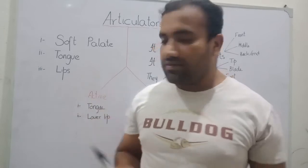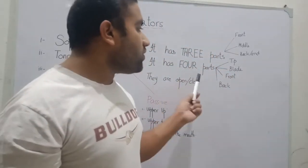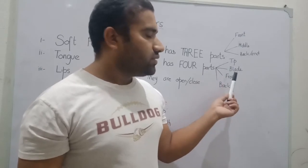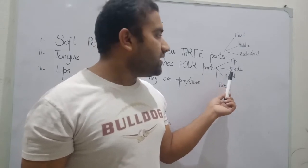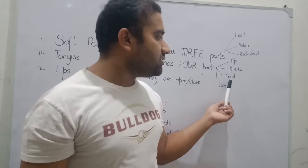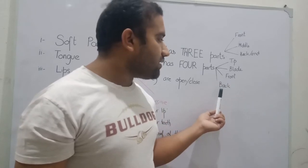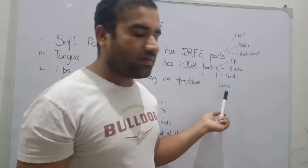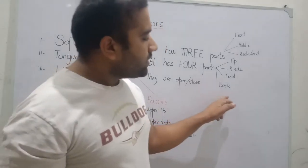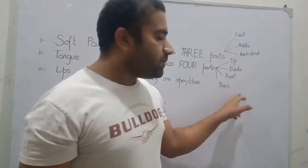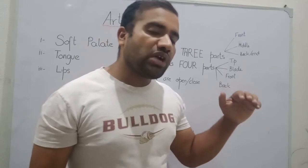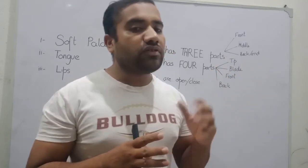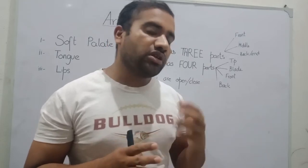The next articulator is the tongue. The tongue has four parts: one is the tip, second is the blade, third is the front, and the fourth is the back of the tongue. When a particular part of the tongue moves and comes close to the passive articulator, the sound that is produced will be a different sound depending on which part is involved.